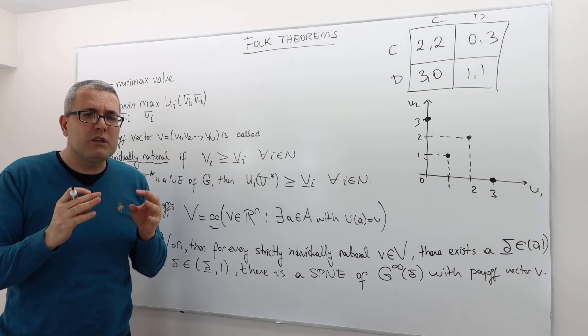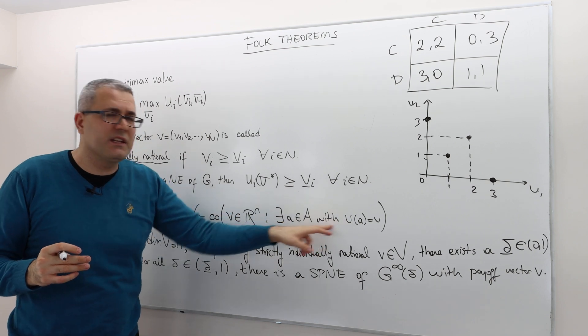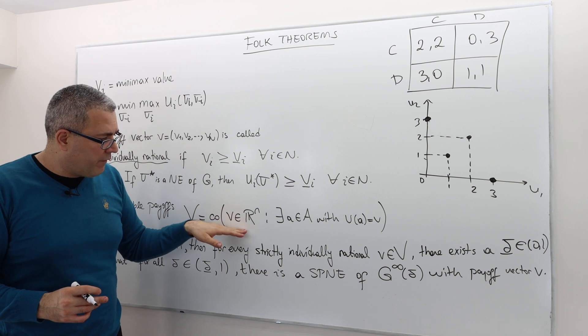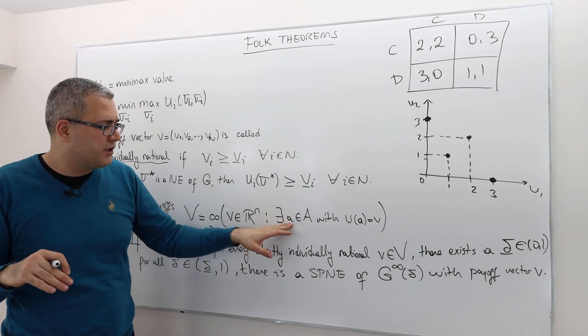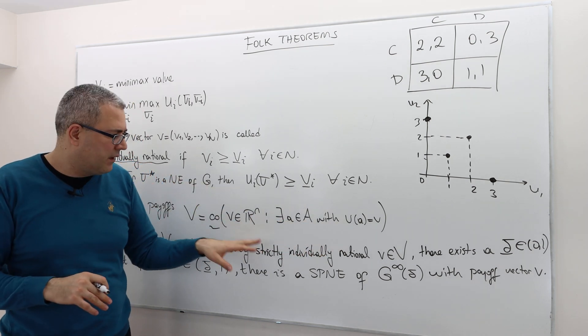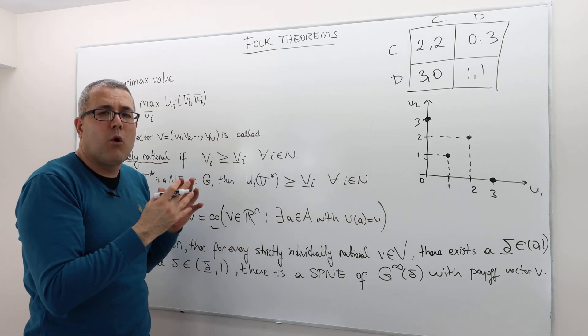Co is the smallest convex set that includes the points in it. All right. So here, what is in it? Well, all the payoff vectors such that there exists some action profile or strategy profile where the utility of the players correspond to that V. All right. This is what this set is. And then I'm taking the convex hull. We call this convex hull of these points.